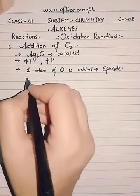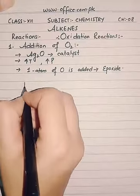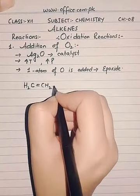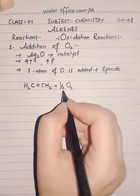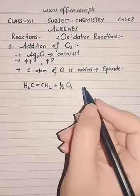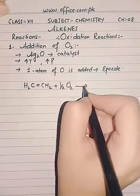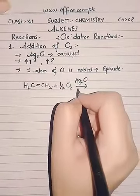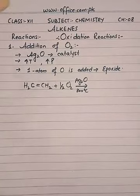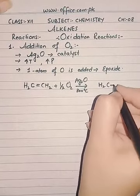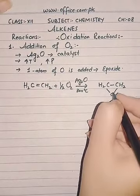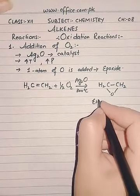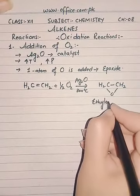Now we will see this with the help of an example. First of all, with ethene, the simplest alkene. This half O₂ means half molecule of oxygen, or one atom of oxygen, with silver oxide as catalyst and temperature as high as 300 degrees centigrade. The product that is going to be formed is ethylene epoxide, because it is formed from ethylene.